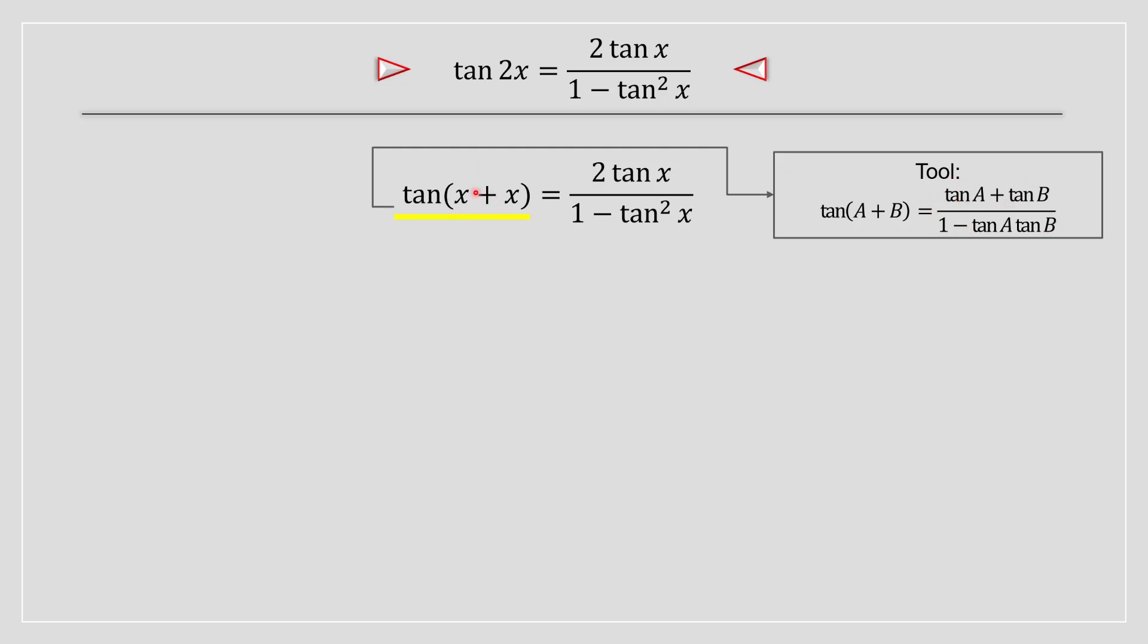Our a term is equal to x and our b term likewise is equal to x. So we're going to do our necessary replacements as you can see on your screen and tan of x plus tan of x in the numerator that's equal to 2 tan of x and then we got tan of x times tan of x in the denominator right here. So that can be rewritten as tan squared of x.